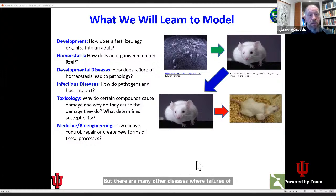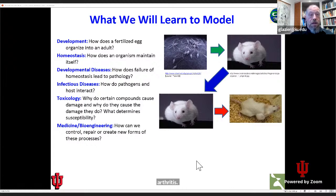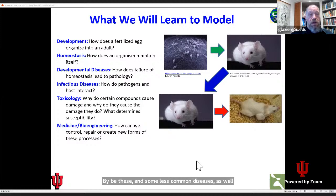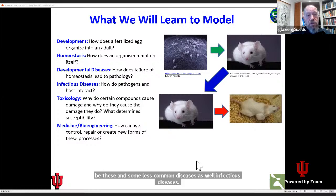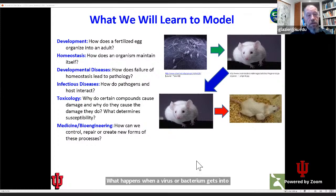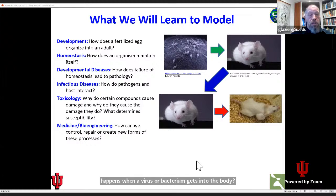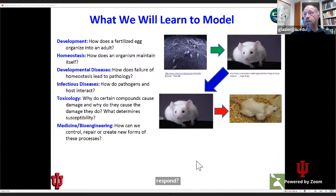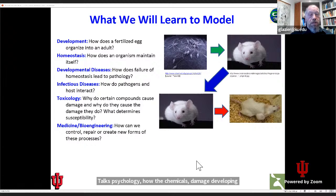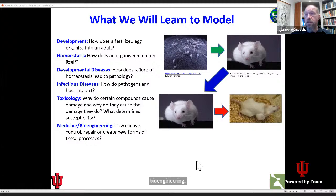Failures of homeostasis include things like autoimmune diseases, arthritis, diabetes, and some less common diseases as well. Infectious diseases — what happens when a virus or bacterium gets into the body? How does the tissue respond? How does the immune system respond? Toxicology — how do chemicals damage developing organisms or adult organisms? And also medicine and bioengineering — how could we create, control, or repair living organisms?